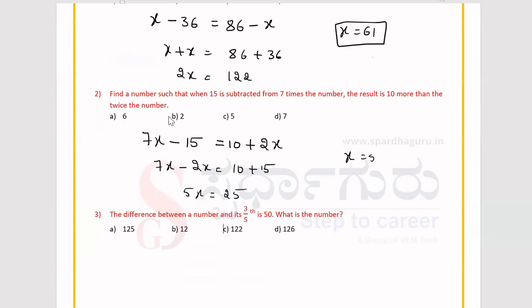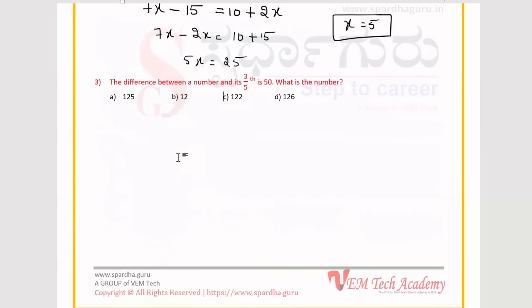Now we'll see the last problem. The difference between a number and its 3/5 the result is 50. What is the number?